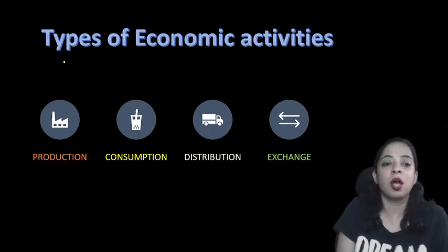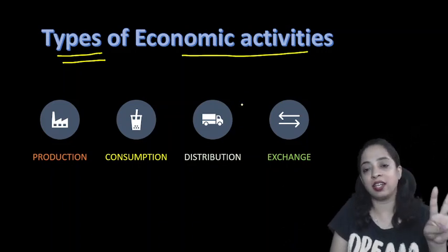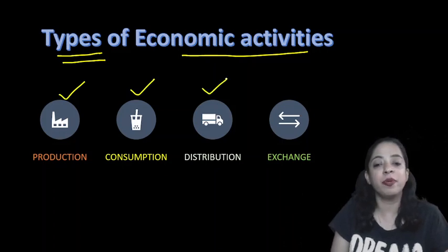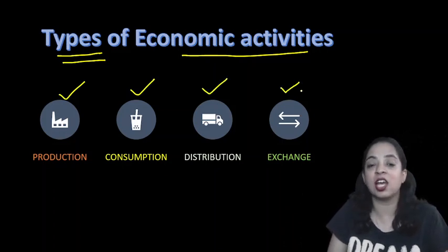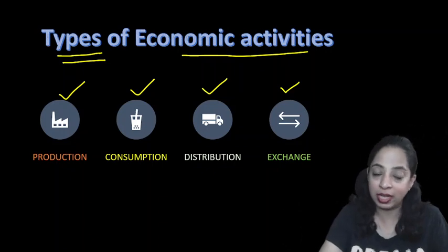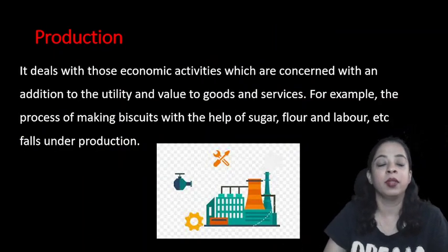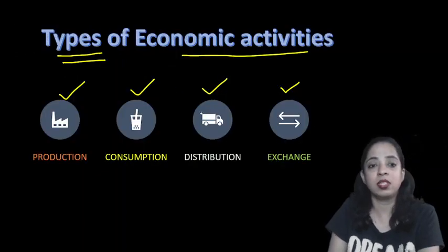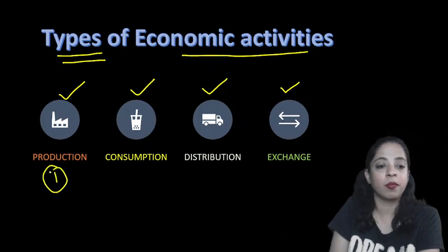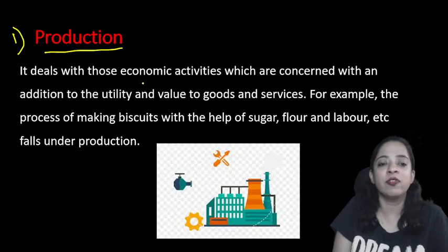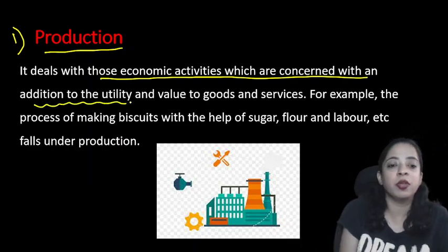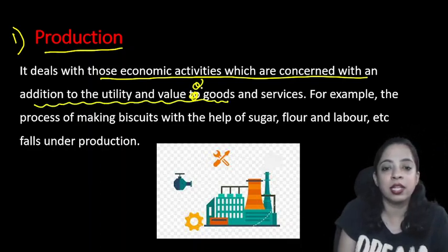Economic activities are broadly categorized into four types: production, consumption, distribution, and exchange. Production is the first type of economic activity. It deals with those economic activities which are concerned with addition to the utility and value of goods and services.